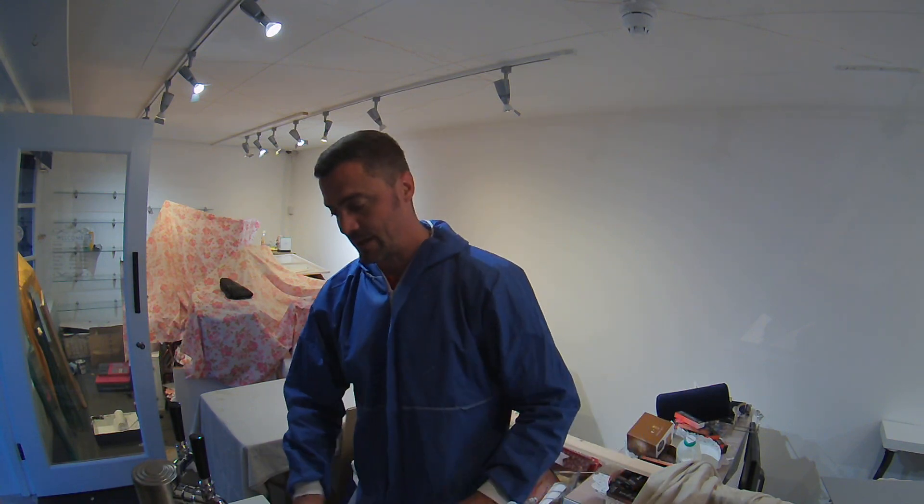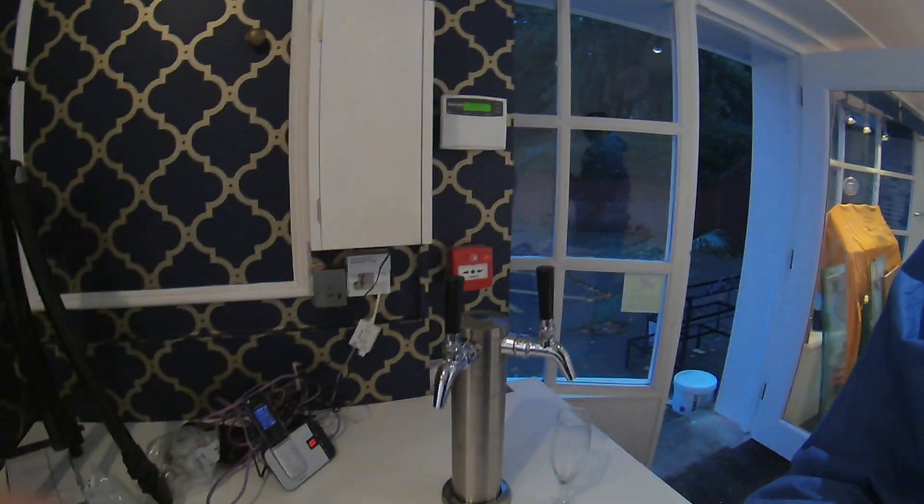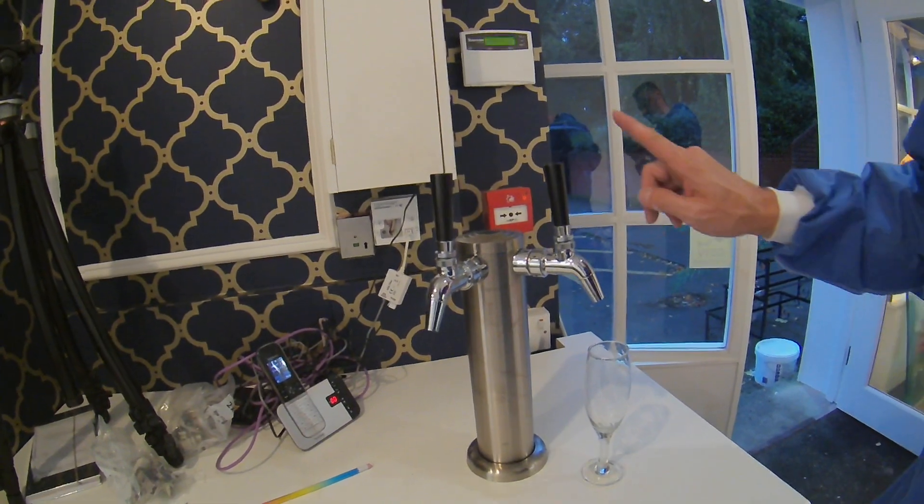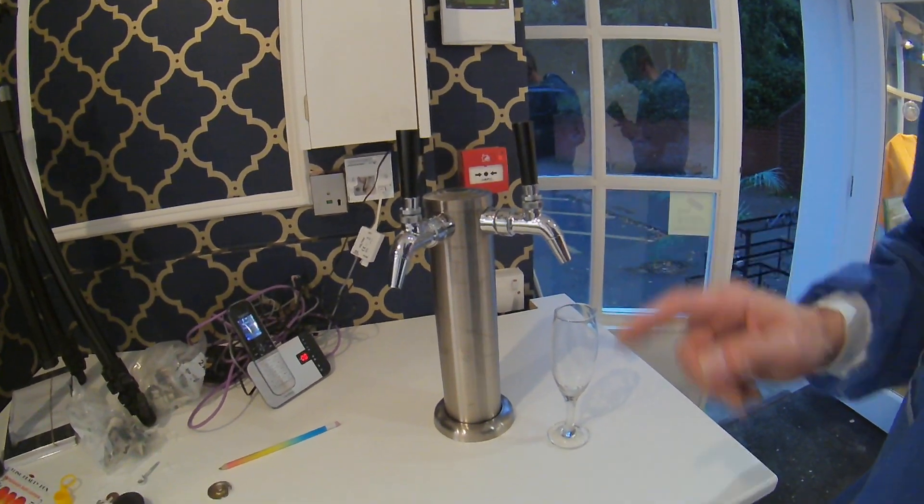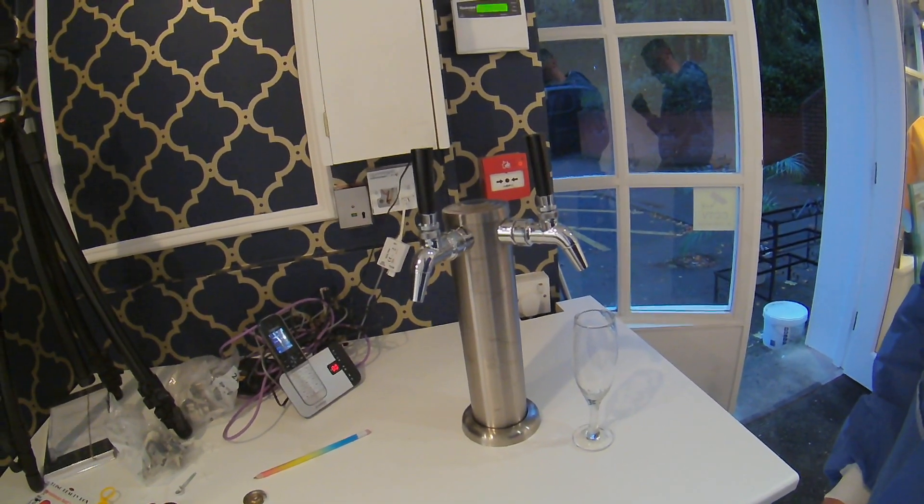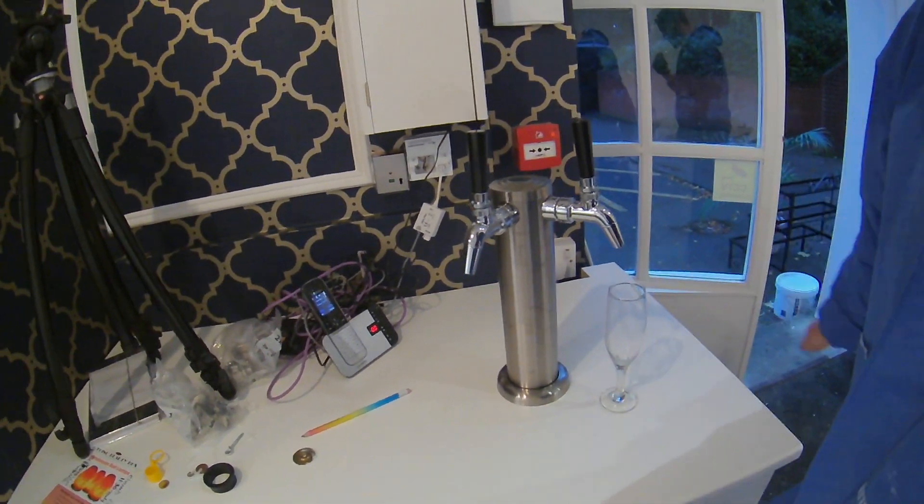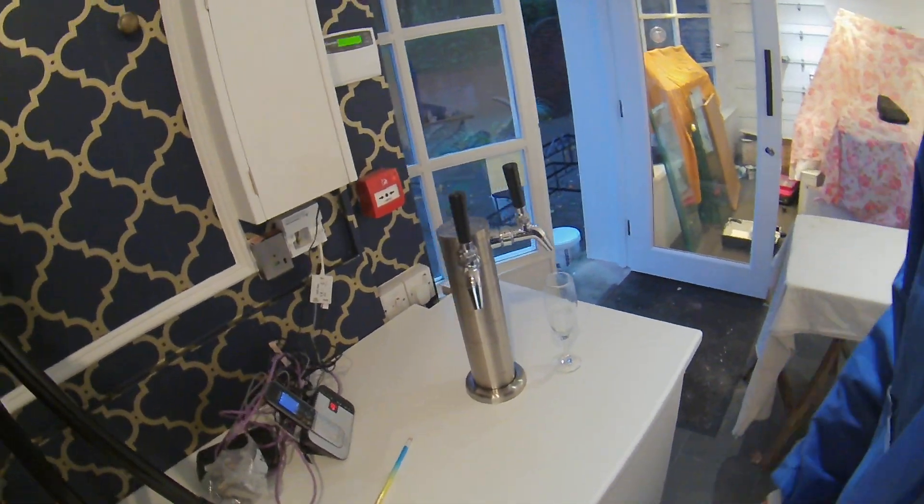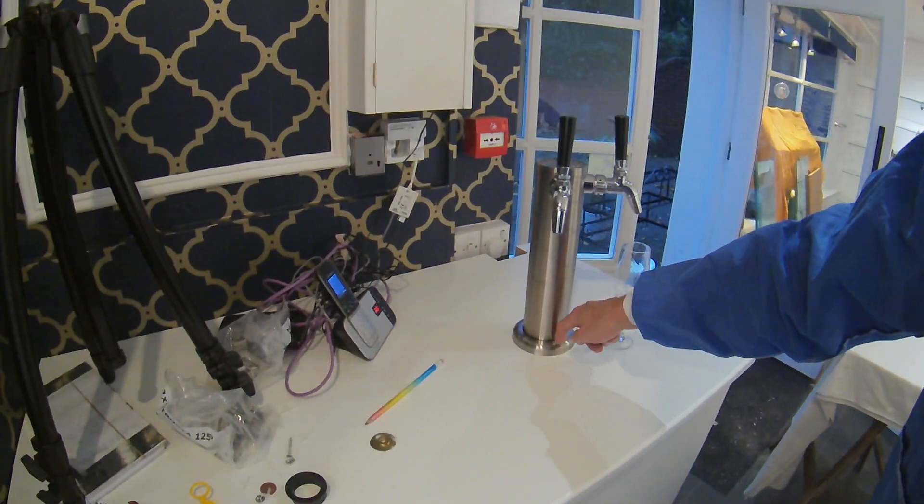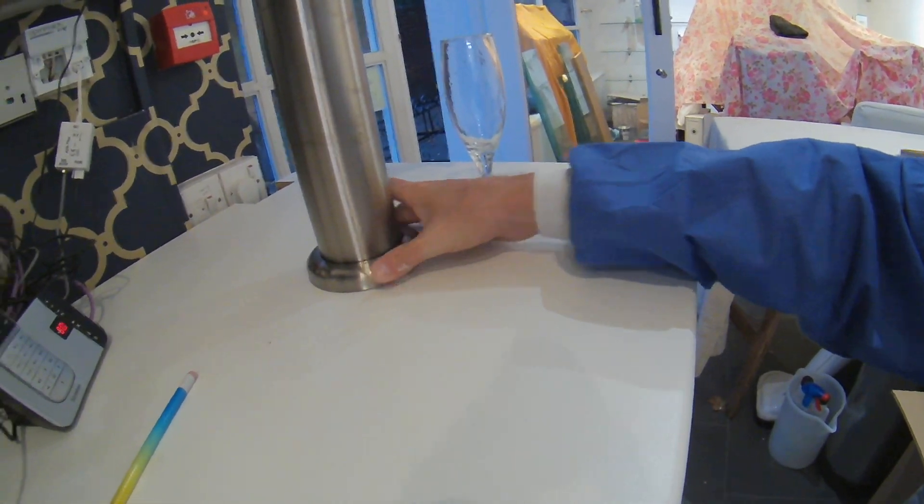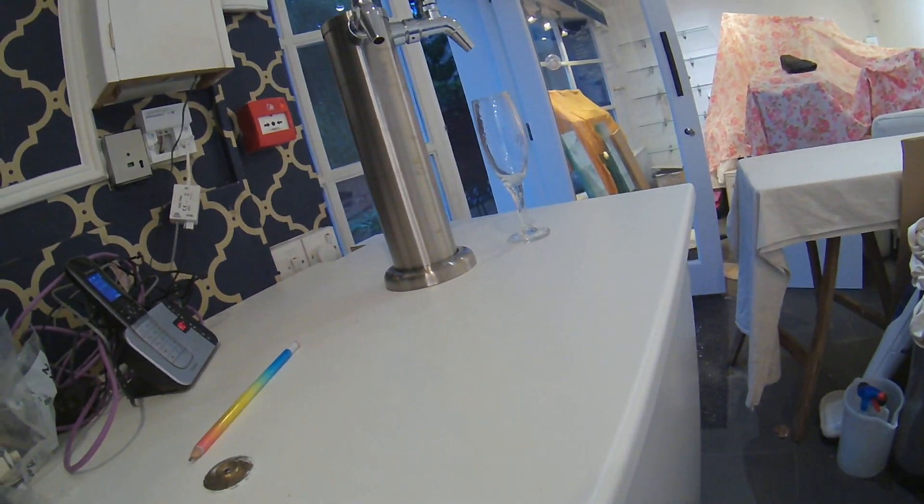So what we've got here is the tower system, which is stainless steel, two Intertap taps. This one is connected at the moment but the keg is quite heavily pressurized. I'm just carbing up the Prosecco that's in there. So we've got a hole straight through the countertop. This comes up and you'll see those four screws in there.